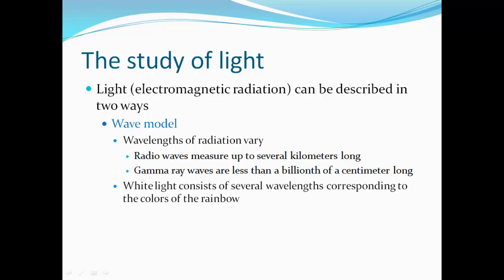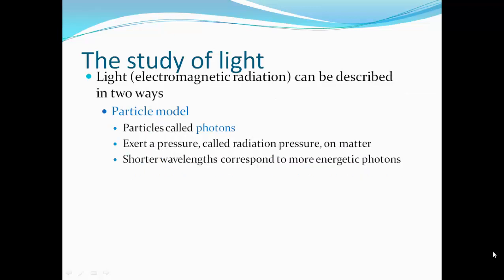Electromagnetic radiation can be described in two ways. A wave model: wavelengths of radiation vary. Radio waves measure up to several kilometers long; gamma ray waves are less than a billionth of a centimeter long. White light consists of several wavelengths corresponding to the colors of the rainbow. Particle mode is the other way of looking at electromagnetic radiation. Particles are called photons. They exert pressure called radiation pressure on matter. Shorter wavelengths correspond to more energetic photons.